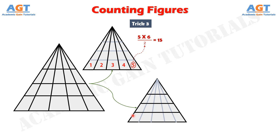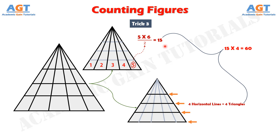Now ignore those lines and consider just the horizontal lines. We count the horizontal lines — here we have 4 horizontal lines, so the number of triangles due to these horizontal lines is also 4. We have 15 and 4, so multiply 15 and 4 to get 60. Thus 60 is the exact number of triangles in this figure. So we have easily learned trick number 3.